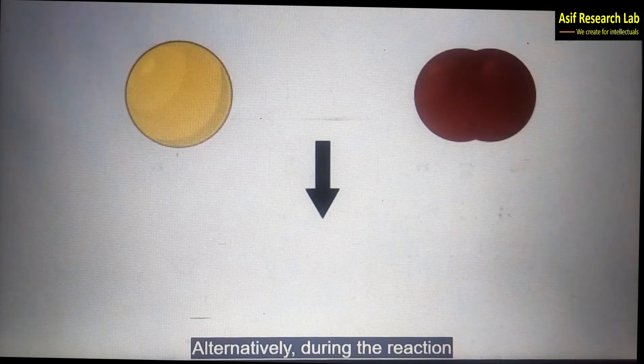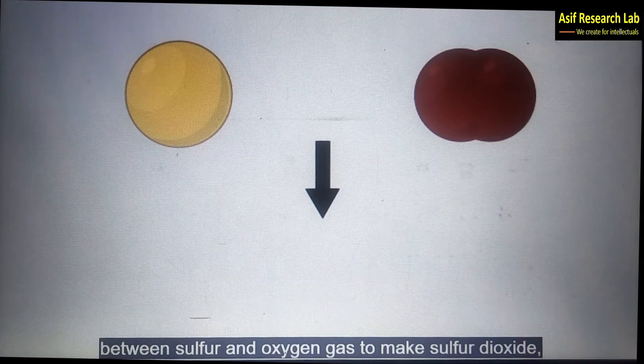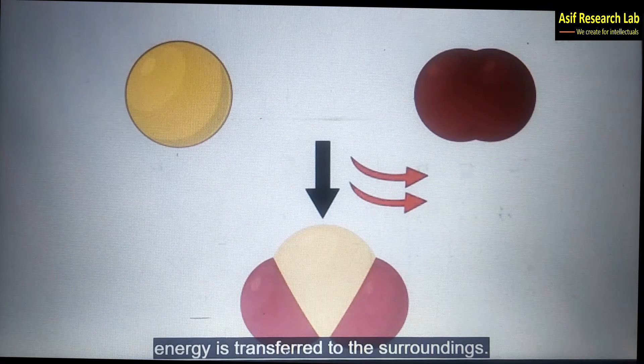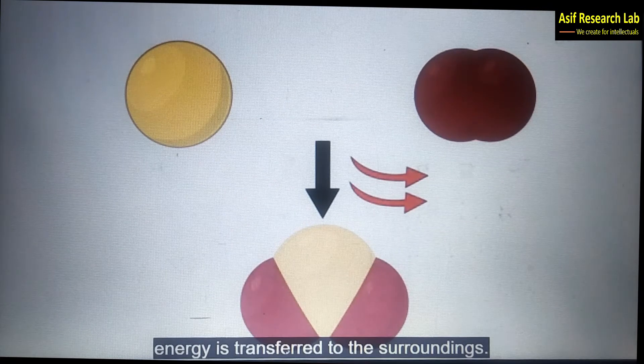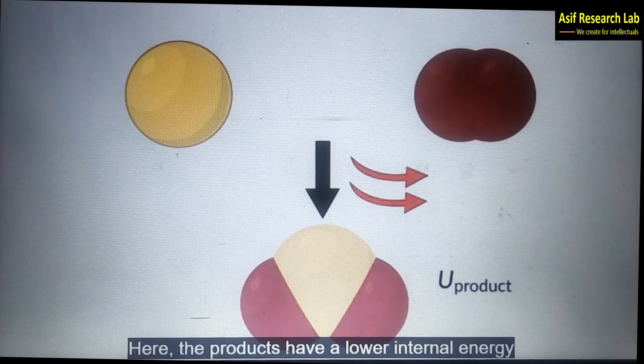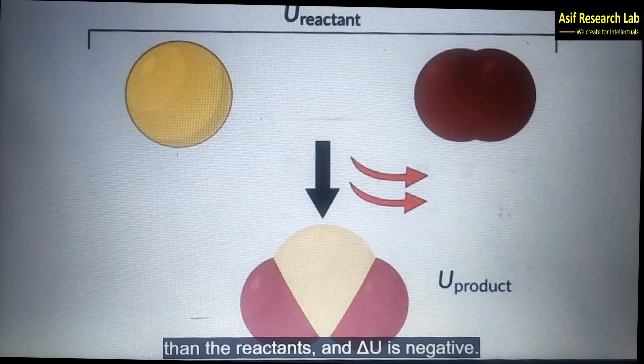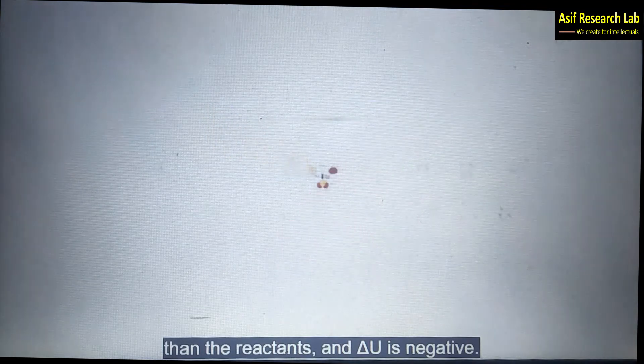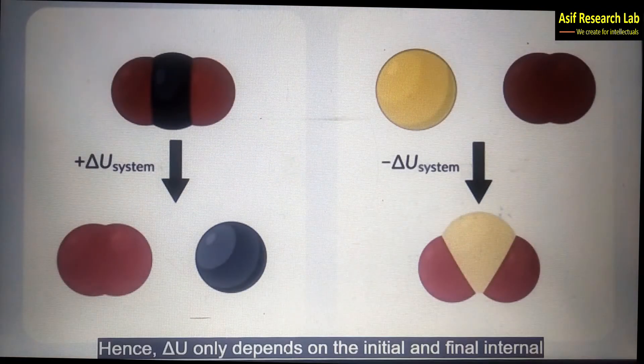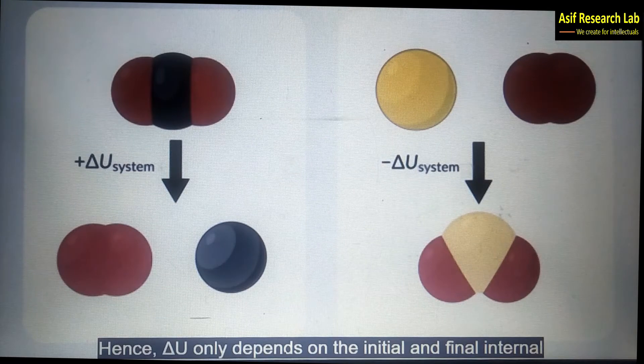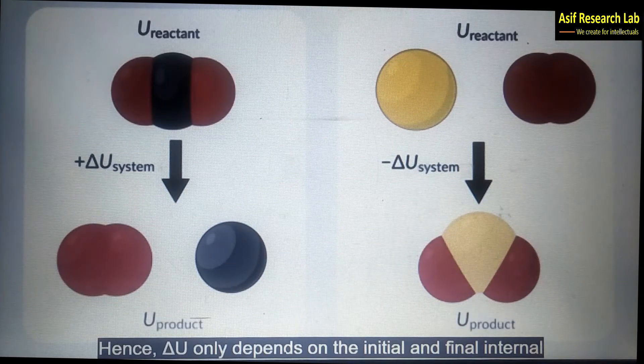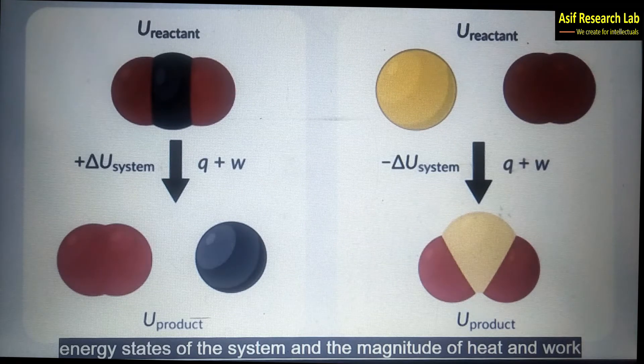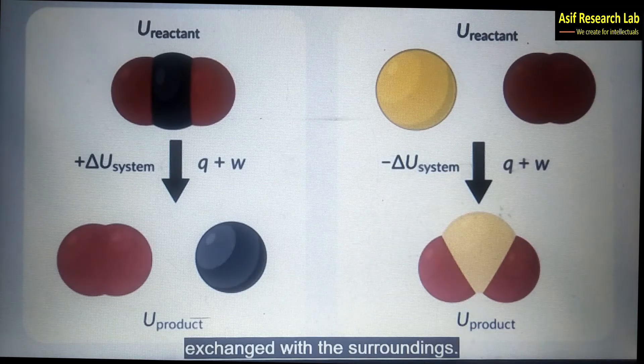Alternatively during the reaction between sulfur and oxygen to make sulfur dioxide energy is transferred to the surroundings. The products have a lower internal energy than the reactants and delta U is negative. Hence delta U only depends on the initial and final internal energy states of the system and the magnitude of the heat and work exchange with the surrounding.